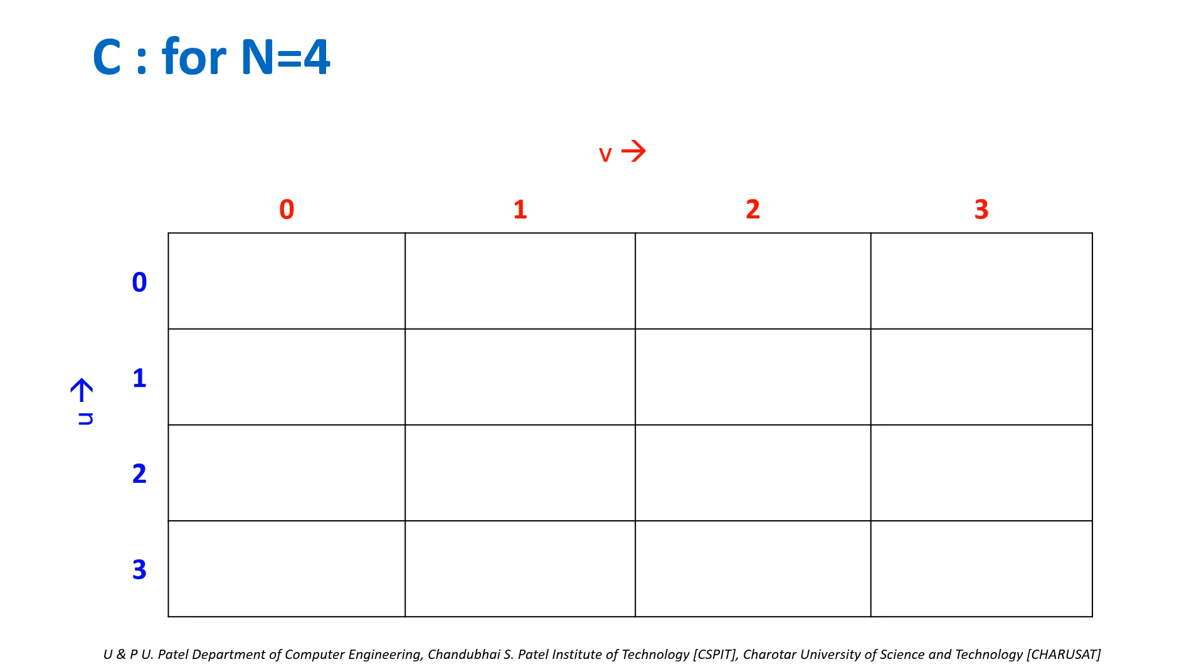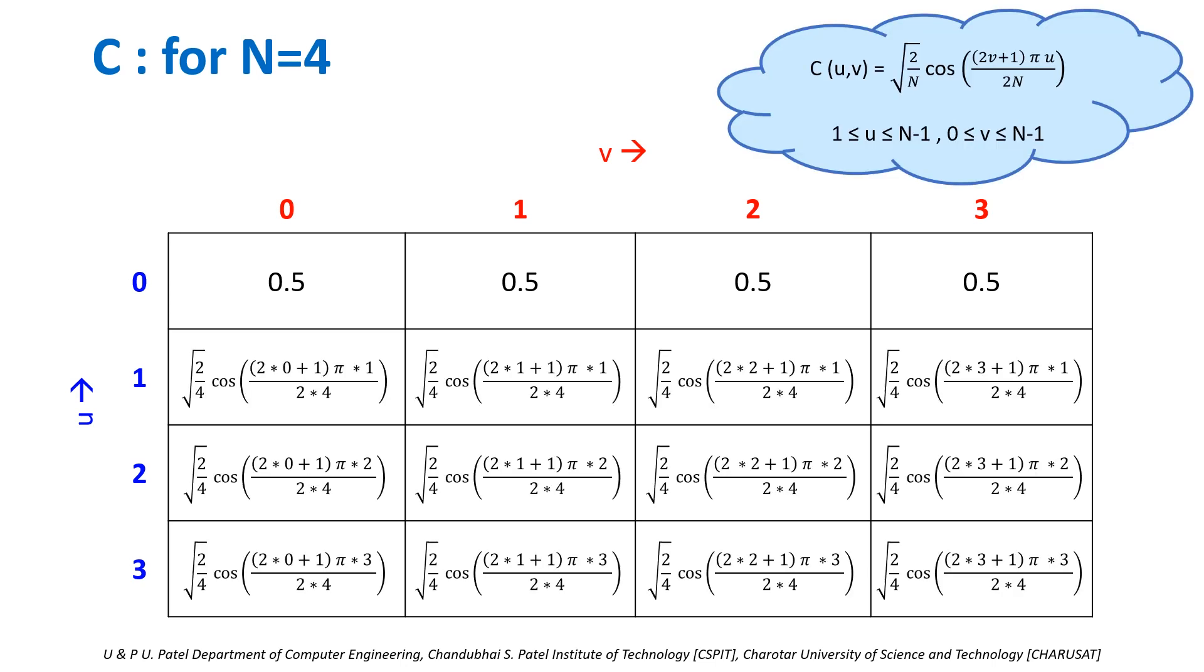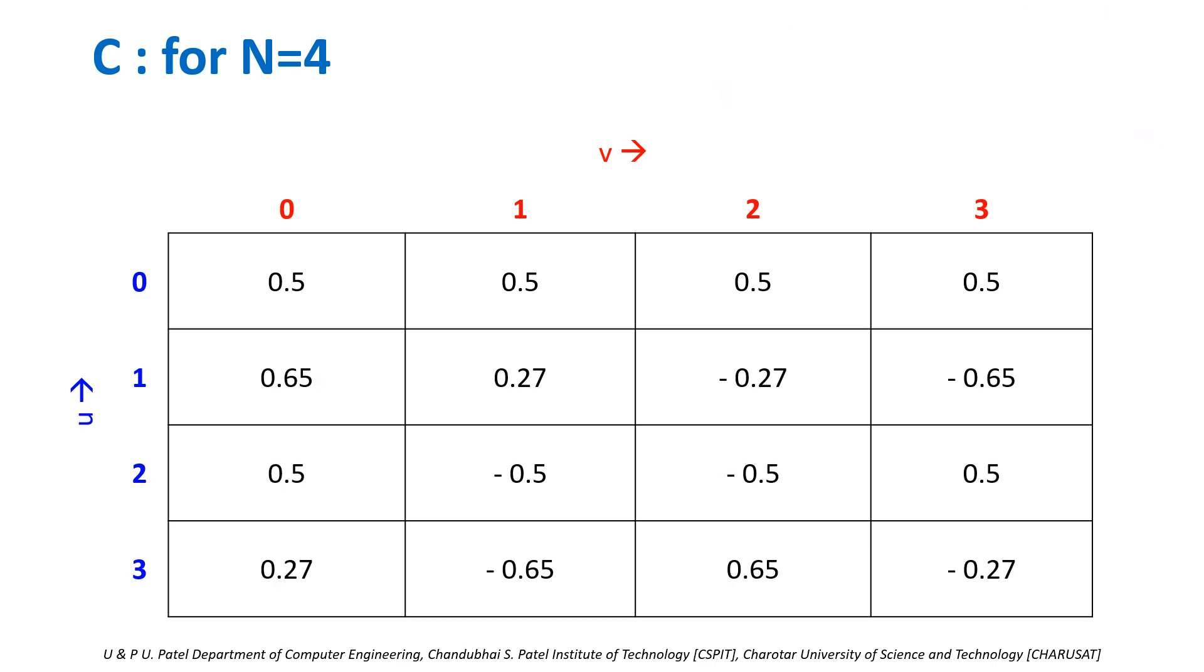Let us construct C for N=4. So C is 4×4 matrix. u ranges from 0 to 3 and v ranges from 0 to 3. For first row, we will follow the equation √(1/N). Here in our case, N is 4, so it is √(1/4). Values turn out to be 0.5. For rest of the rows, we will follow second equation. Replace N with 4 and respective values of u and v for each cell. This will be the result at the end.